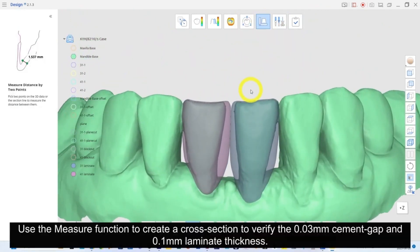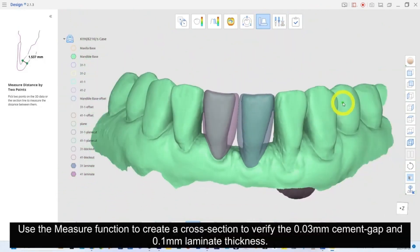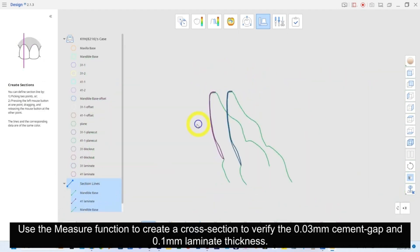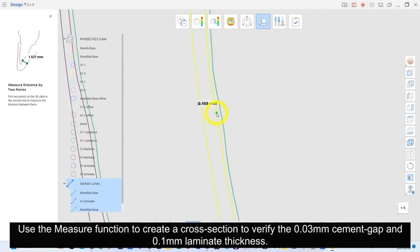Use the measure function to create a cross section to verify the 0.03mm cement gap and 0.1mm laminate thickness.